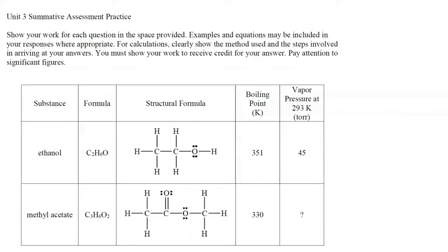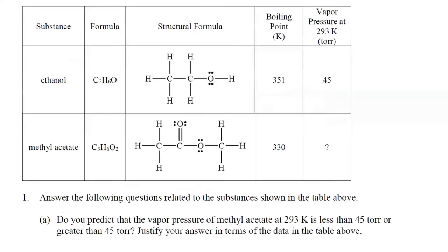The instructions on this slide are the same instructions you will see on the AP Chemistry Free Response section. It says: show your work for each question in the space provided. Examples and equations may be included in your responses where appropriate. For calculations, clearly show the method used and the steps involved in arriving at your answers. You must show your work to receive credit for your answer. Pay attention to significant figures. We are given a table with two different substances, ethanol and methyl acetate, showing chemical formulas, structural formulas, boiling points in kelvins, and vapor pressure at 293 kelvin in torr for ethanol, but not for methyl acetate.